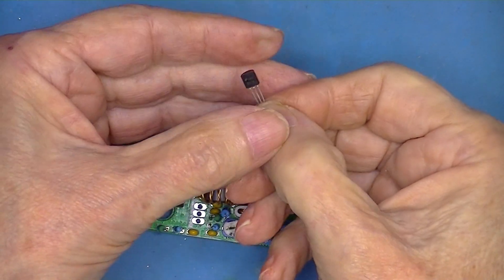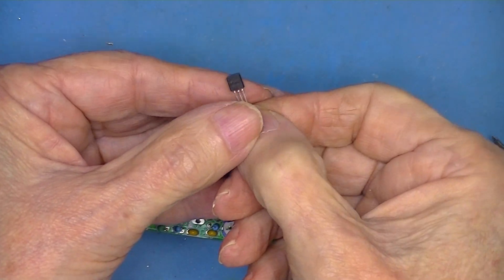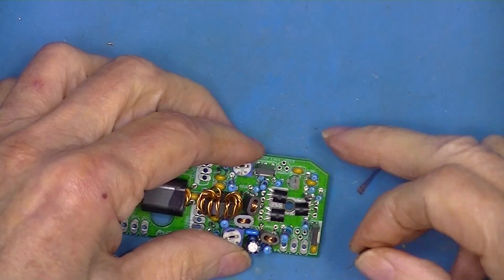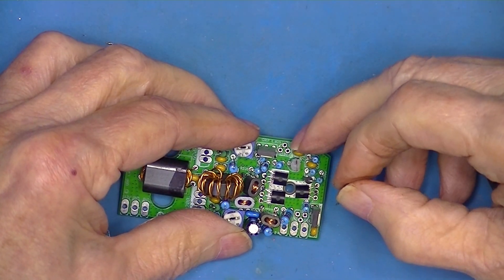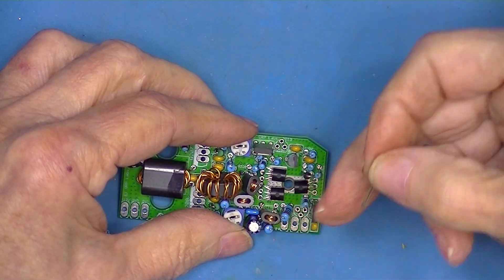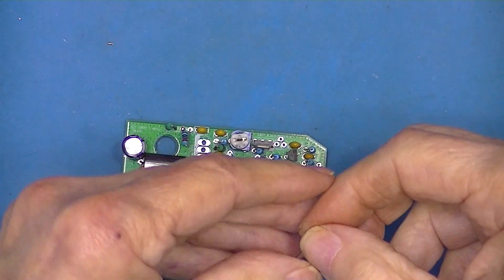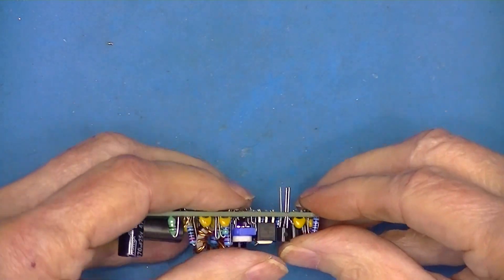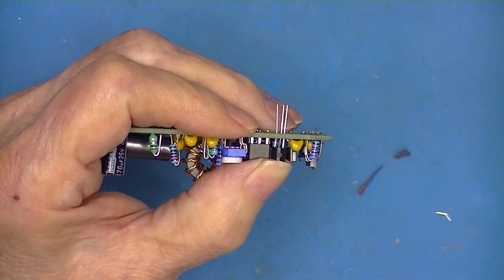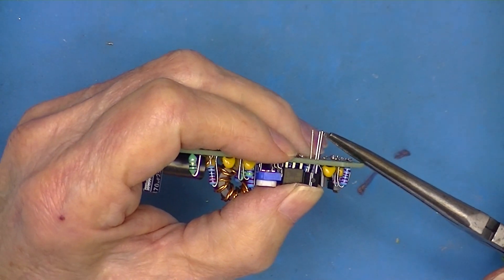We have another one of these BS170s. It installs in this triangular hole pad here. Flat surface facing this way. Push it down like the rest. Splay the legs out a little bit.